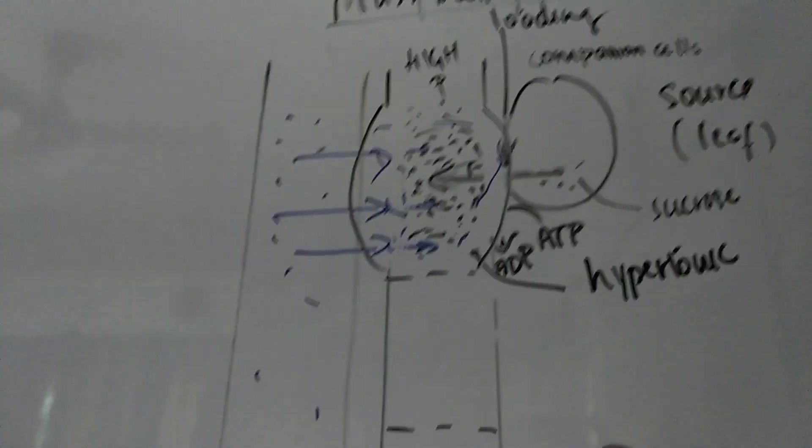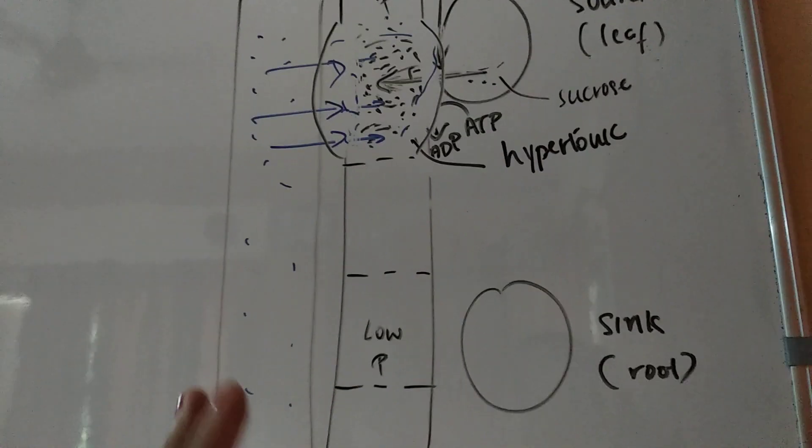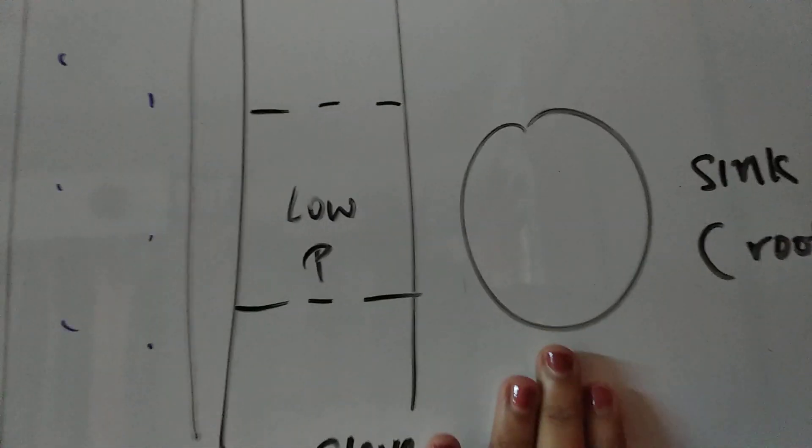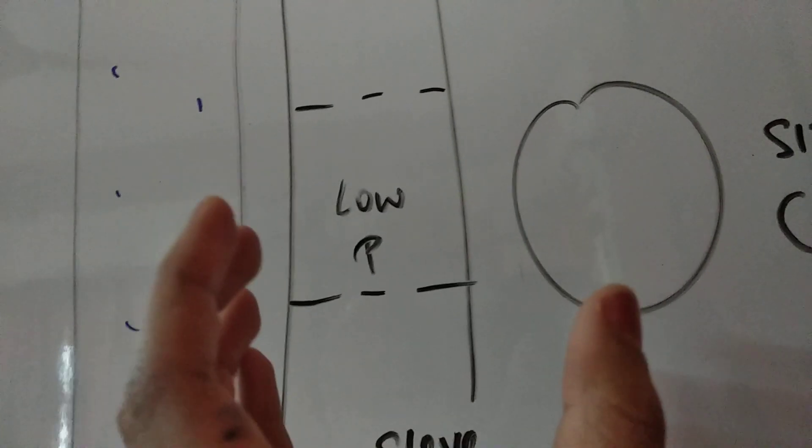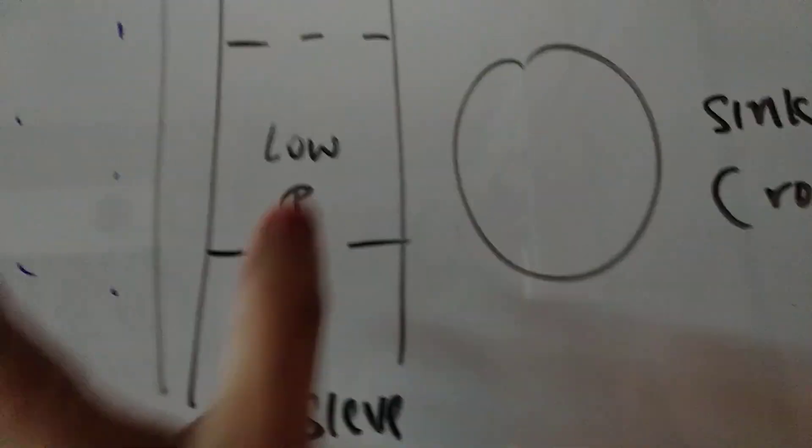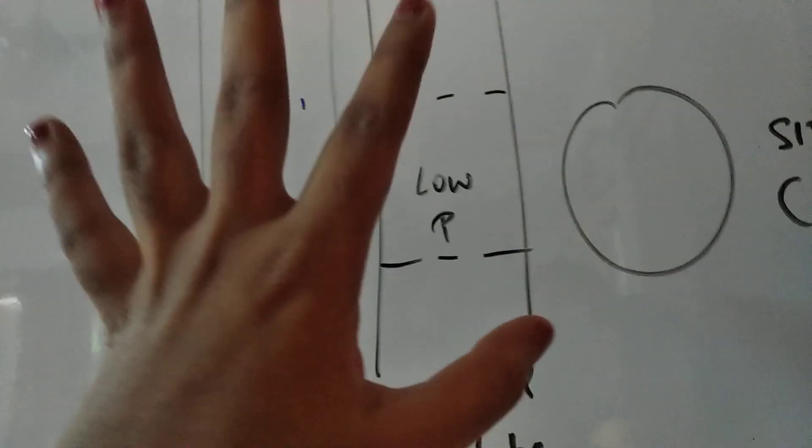So now answering your question about how the phloem realizes which part it has to transport its food to: whichever region is the sink, it is at very low pressure because it doesn't have any solute or any water. Since it lacks solute or water, it barely has any water coming from the xylem. It's at low pressure.